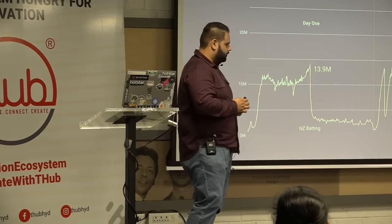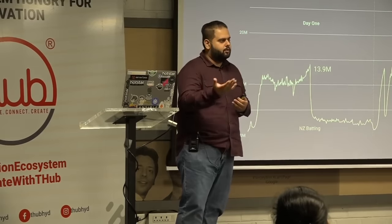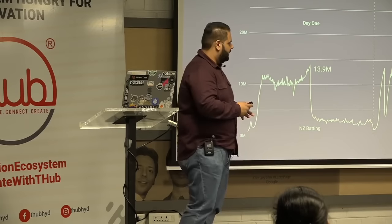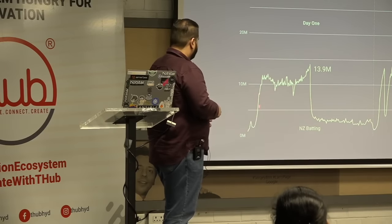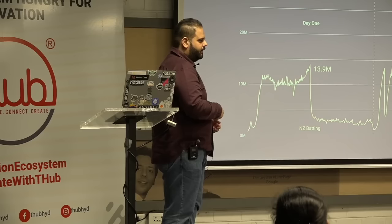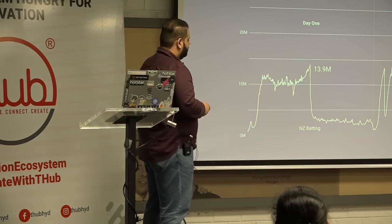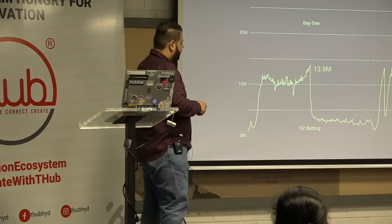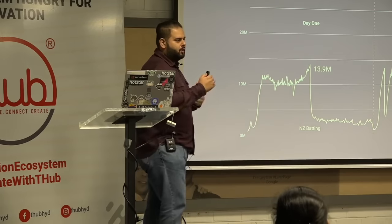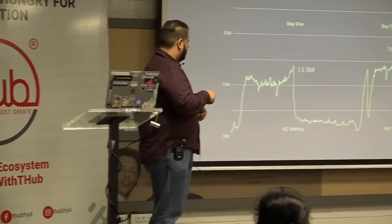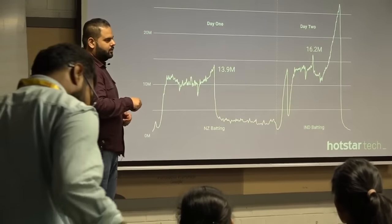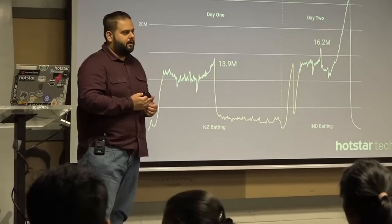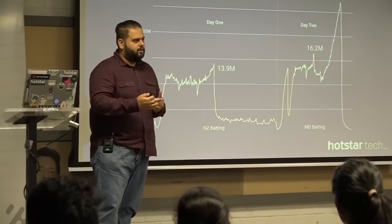That particular match was spread across 2 days because it was rain-affected. That is why you see day 1 and day 2. Look at how quickly the traffic is growing. The other key thing to notice is that most of the time it is about 10 million — that shows how resilient the platform is and how stable the infrastructure is.